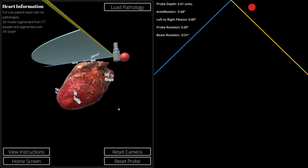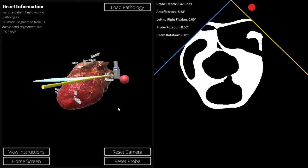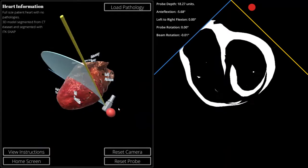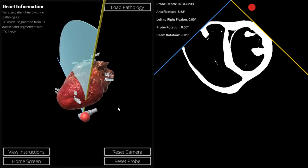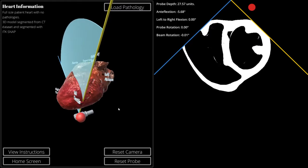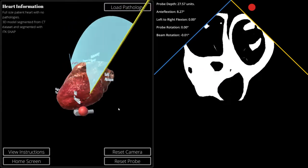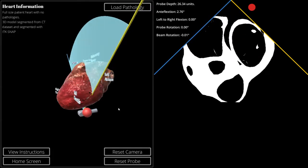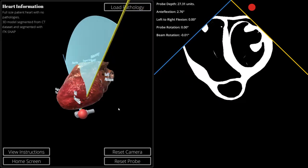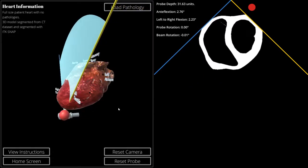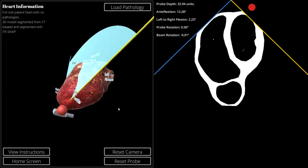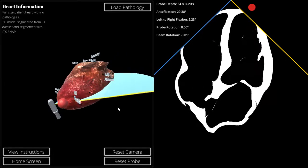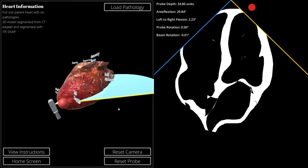As we continue to move down past the midesophageal views, the probe will turn as if you were heading into the stomach or the fundus of the stomach so that you can do a transgastric view of the heart. So there's a transgastric short axis and we can do a complete examination through here as well without going through the heart. We can retreat the probe and continue with our exam all the way down to a deep transgastric view, which can be a little bit tricky sometimes because of the positioning of this probe.